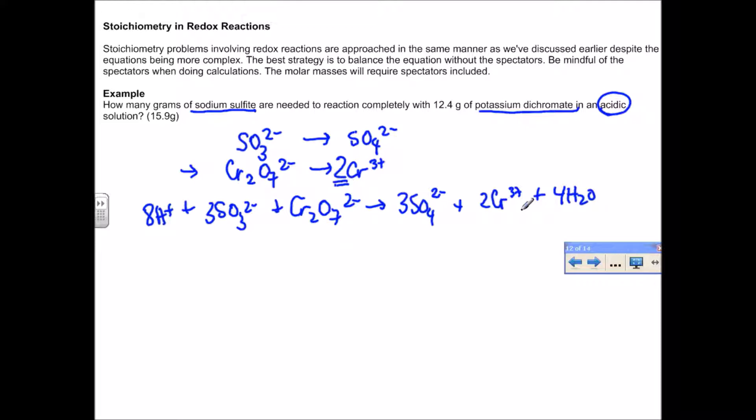The question is how many grams of sodium sulfite are needed to react with 12.4 grams of potassium dichromate. You're starting with 12.4 grams of potassium dichromate. You need to be careful when finding the molar mass to include the spectator but also be mindful of the charges, so it's K₂Cr₂O₇. The number of moles here is 12.4 divided by 294.2. The moles of potassium dichromate is 0.042.